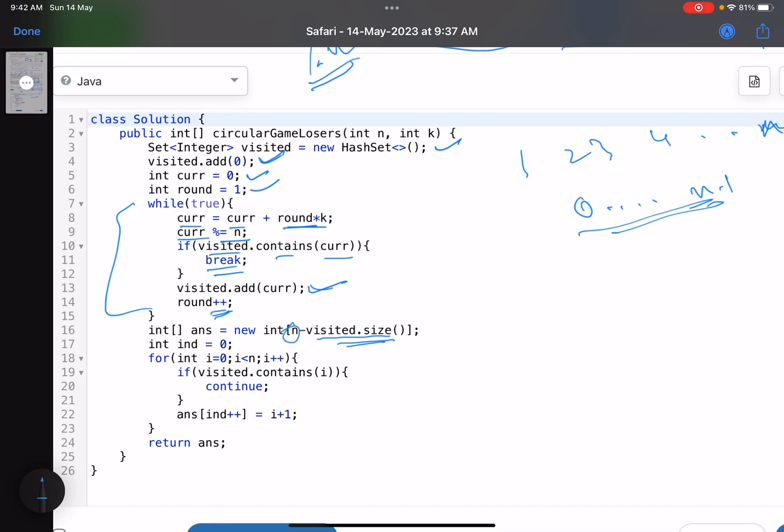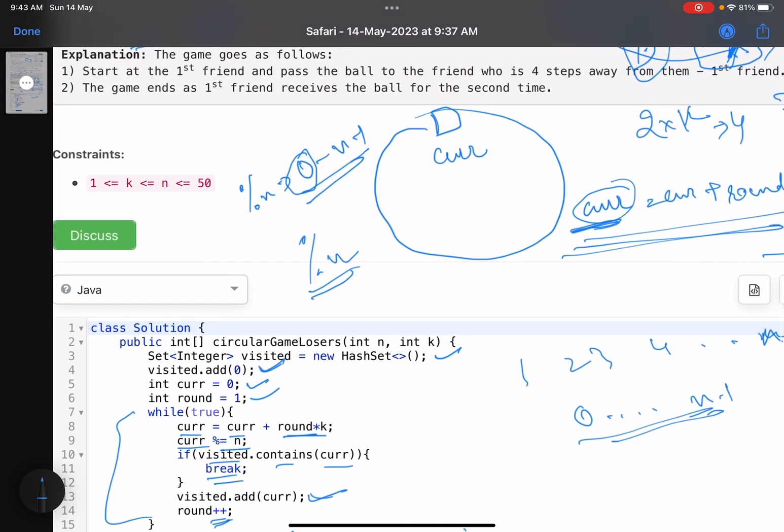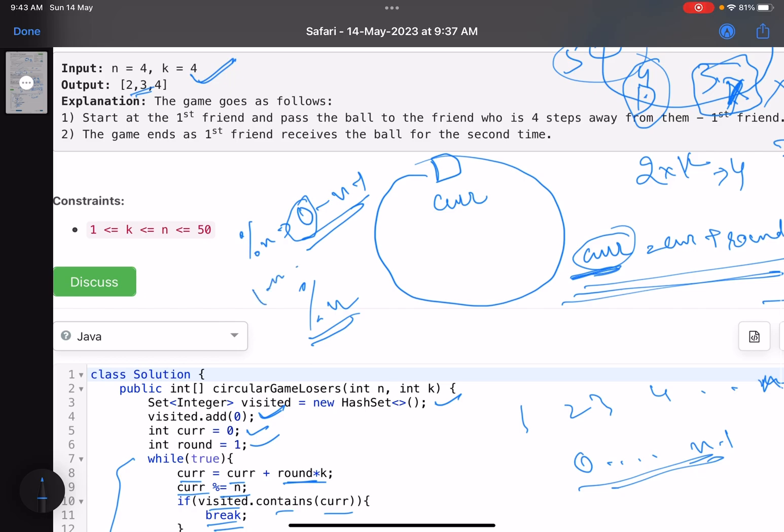This will keep on happening. Now what happens? These are the number of players who are visited, these are the total number of players, so n minus this number of players are losers. So I instantiate an array, this is index number zero. Now what I do? I check what are the values that are not present in the set and I just add that in my answer array. If visited.contains(i), you skip it. Else you add that in your answer and you finally return your answer. This was totally based on implementation, nothing fancy was needed here. Probably the only trick I would say was mapping one to n to zero to n minus one that would simplify the problem for you.